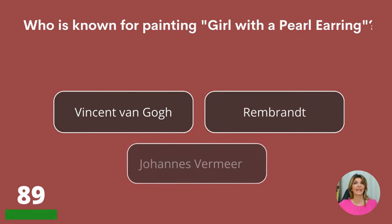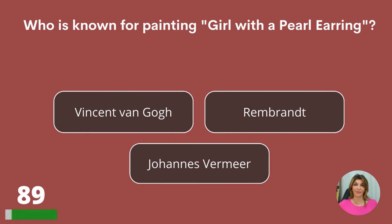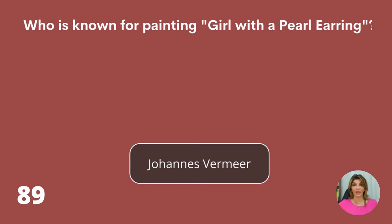Who is known for painting Girl with a Pearl Earring? Vincent van Gogh, Rembrandt, or Johannes Vermeer? Johannes Vermeer.